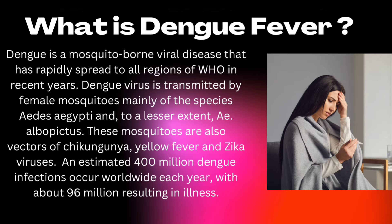What is Dengue Fever? Dengue is a mosquito-borne viral disease that has rapidly spread to all the regions of WHO in recent years. Dengue Fever is transmitted by female mosquitoes, mainly of the species Aedes aegypti and to a lesser extent Albopictus. These mosquitoes are also vectors of chikungunya, yellow fever and Zika viruses. An estimated 400 million Dengue infections occur worldwide each year, with about 96 million resulting in illness.